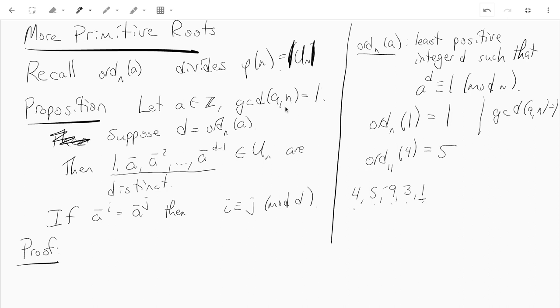And then we just have this proposition, which tells us a little bit more about the order. It says that if d is the order of a mod n, then these powers of a, these d powers of a, are all distinct. And furthermore, if you have two powers of a which are the same, then it means that the powers are congruent mod d, where again, d is the order of a mod n.